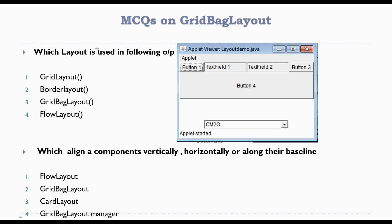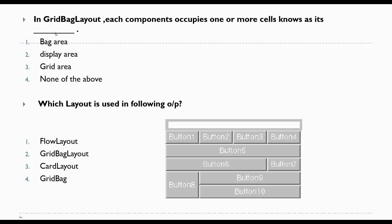Now let's see some MCQs on today's topic. Which method is used in the following output? The answer is GridBagLayout. Next question: which layout aligns components vertically, horizontally, or along their baselines? The answer is GridBagLayout manager. Next: in GridBagLayout, each component occupies one or most cells known as its — the answer is display area. Last question: which layout is used in the following output? The answer is GridBagLayout.